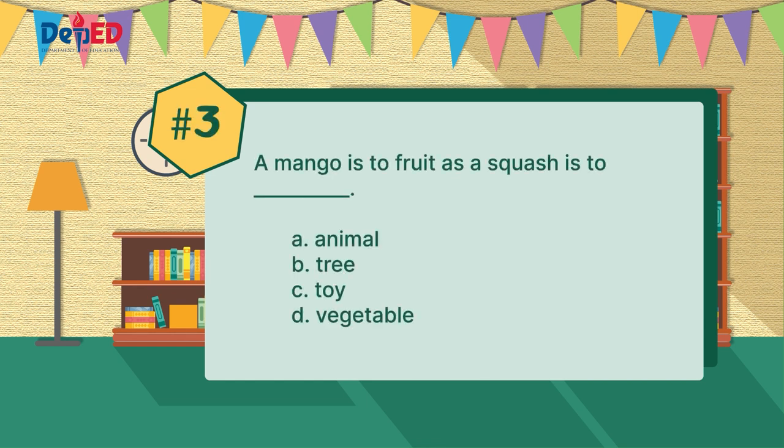Number three: a mango is to fruit as a squash is to blank. Letter A, animal? Letter B, tree? Letter C, toy? Letter D, vegetable?